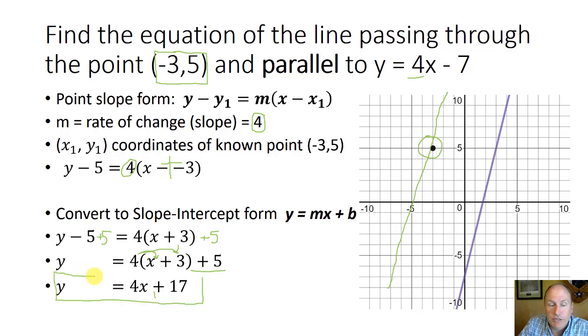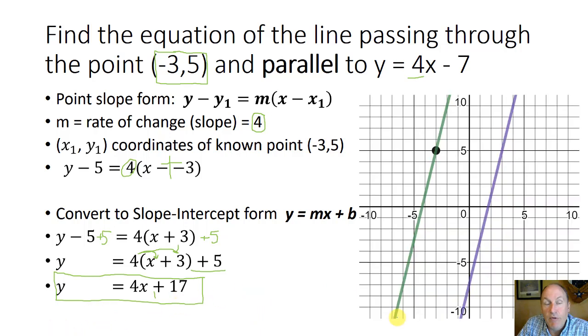That is the equation in slope intercept form of a line that is parallel to the original line of 4x minus 7, but passes through the point negative 3 comma 5. So let's take a look at what that looks like. If we were to graph the equation y equals 4x plus 17, you see that it is parallel to the original line and passes through negative 3 comma 5.